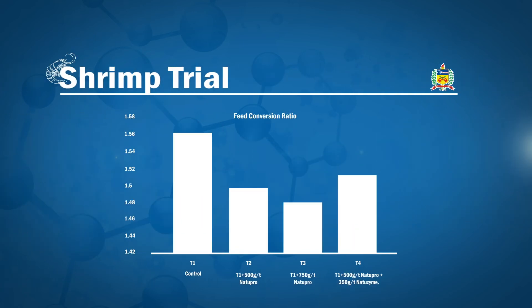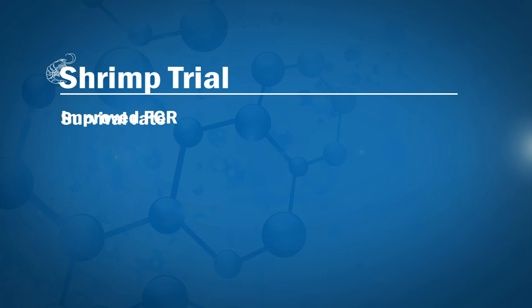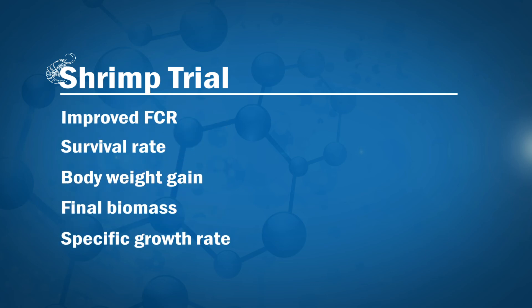In a trial to evaluate the effect of Natupro in Pacific white shrimp in relation to performance, immunology, and midgut microbiology, the addition of Natupro improved FCR, survival rate, body weight gain, final biomass, and specific growth rate compared to the control.